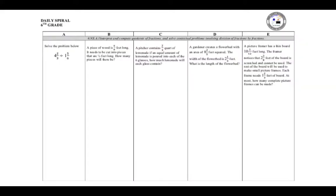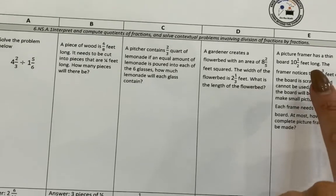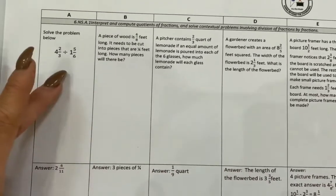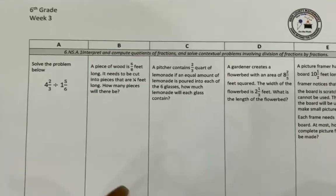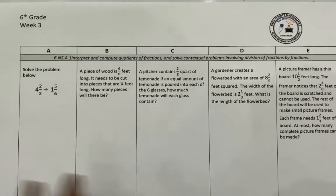In your packet you will find your sixth grade daily spiral problems, labeled A through E. Make sure that you have a pencil and your packet. I'm going to be working from E backwards because these are the more difficult problems. I know that you have the answer key, but I encourage you to fold it over so we can work the problems together and you can try some on your own.